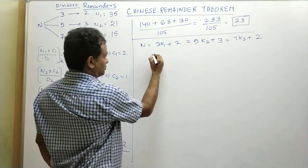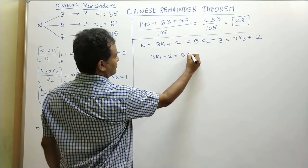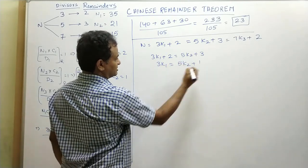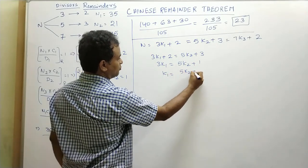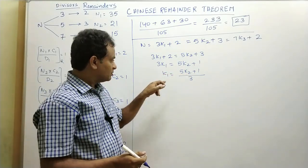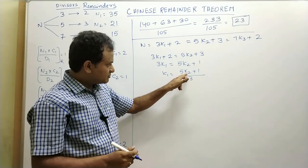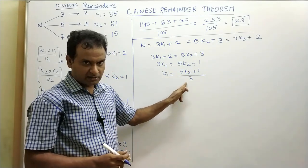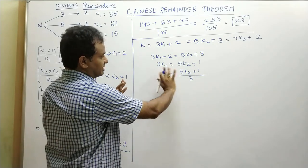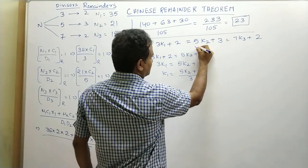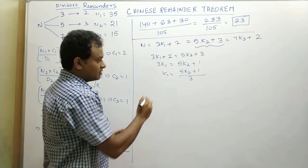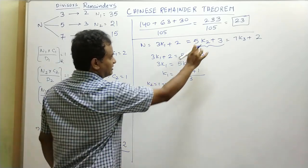Taking the first two equations: 3k1 + 2 = 5k2 + 3, so 3k1 = 5k2 + 1 divided by 3. Since k1 and k2 must both be integers, we find for what value of k2 this becomes an integer. When k2 = 1, we get 6 divided by 3 = 2, which is an integer. Substituting k2 = 1 into the equation gives n = 8, the least number satisfying the first two equations.